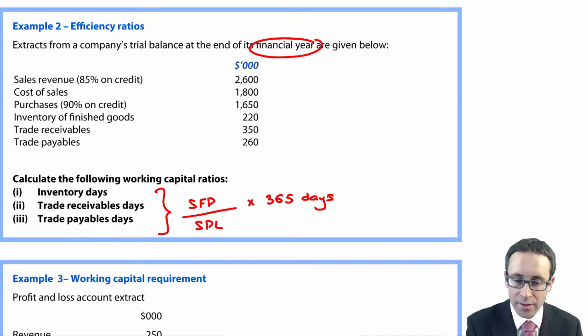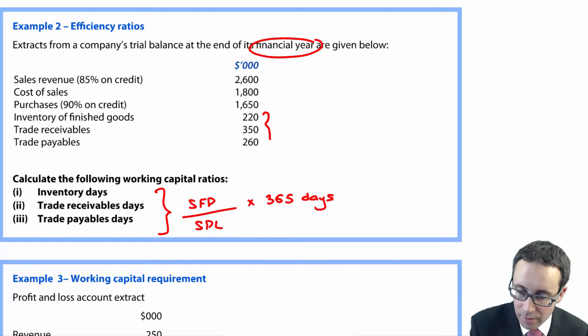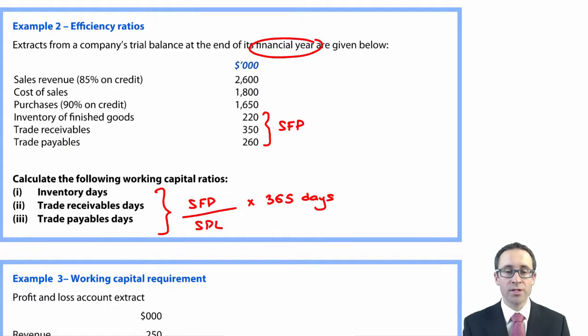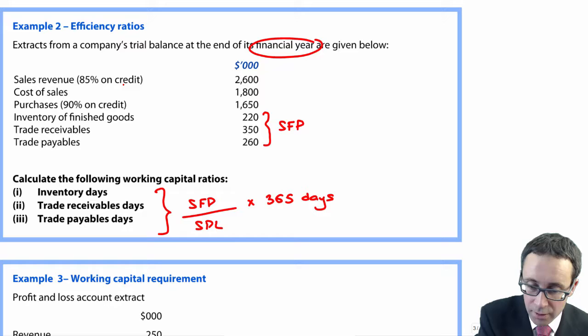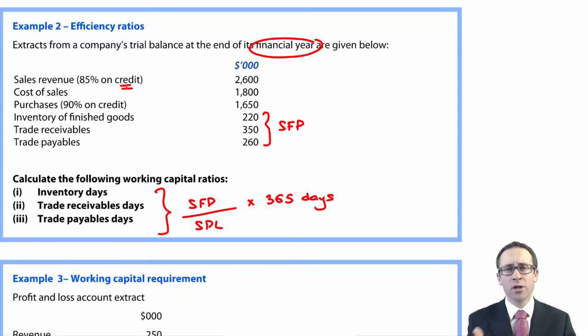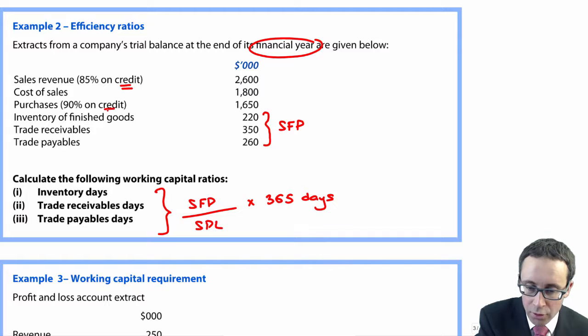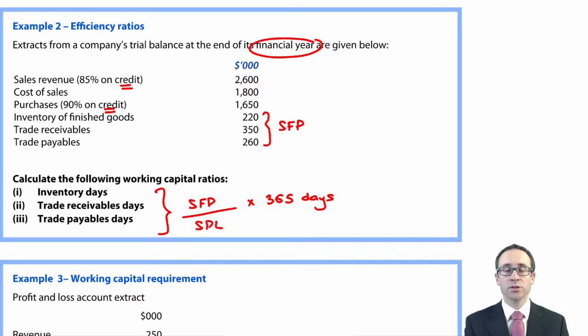I want to take my statement of financial position figure at the year end, divide it by a statement of profit or loss, and multiply by 365 days. You can see there that you have these SFP figures - the inventory, receivables and payables. You've got the profit or loss figures above, but do be careful because we want to look at credit sales with regards to receivables, and credit purchases with regards to your payables.